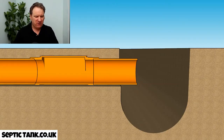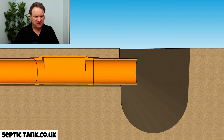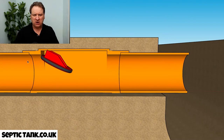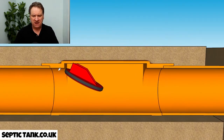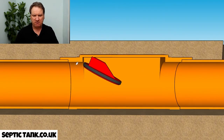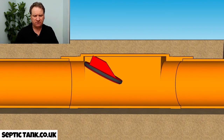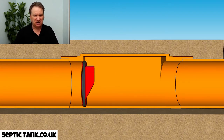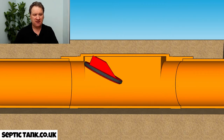So here we've got a pipe going into a ditch. A non-return valve would go here in the pipe — it sits on top of the pipe. Basically it has two functions: it opens and shuts. That's pretty simple, isn't it? It opens and it shuts, just like so.